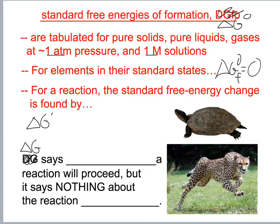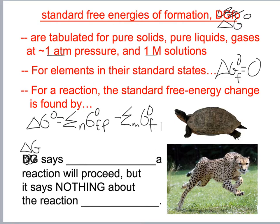Delta G naught equals the sum of the coefficients times the free energy of formation of the products minus the sum of the coefficients times the free energy of formation of the reactants. Delta G determines which way a reaction will proceed — it has nothing to do with reaction rate.